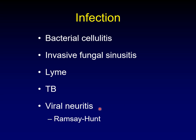Viral neuritis can be very confusing, and whether you consider these diseases a viral infection or a post-viral response to the infection, we'll put them in both categories. Ramsey Hunt being the classic example, causing enhancement of the seventh and eighth cranial nerves.